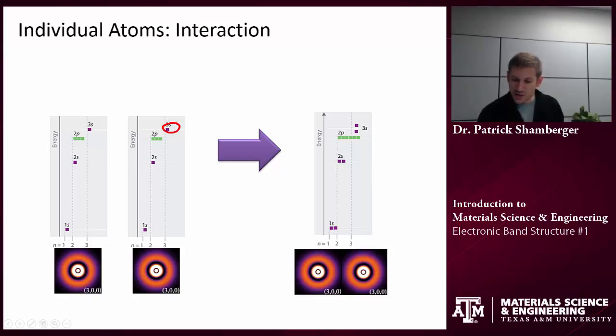The 3s orbital starts to split into two different energy levels. And this is what I mean by the constructive - constructive will be down here and the destructive, higher energy level orbitals.